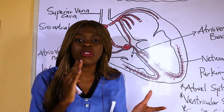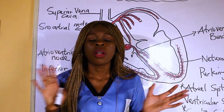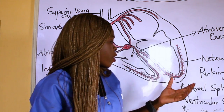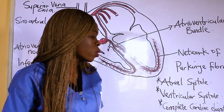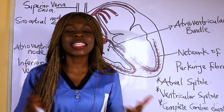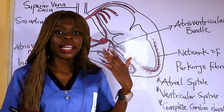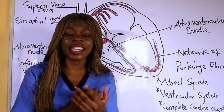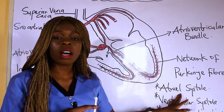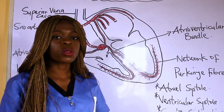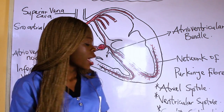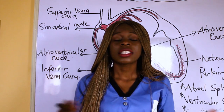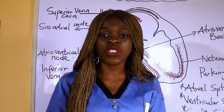To summarize: each cardiac cycle consists of atrial systole, ventricular systole, and complete cardiac diastole. At 60 to 80 beats per minute, each cardiac cycle takes 0.8 seconds total. Atrial systole is 0.1 seconds, ventricular systole is 0.3 seconds, and complete cardiac diastole — the relaxation phase — is 0.4 seconds.